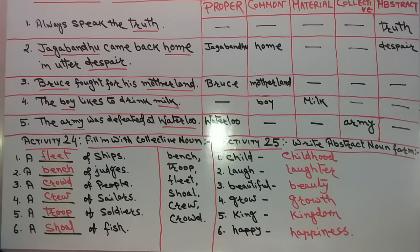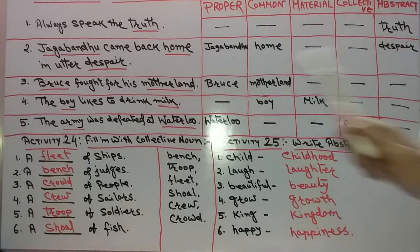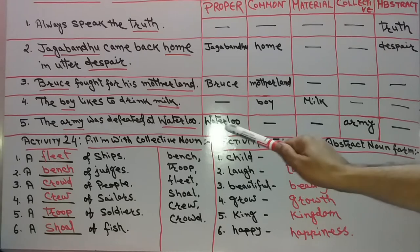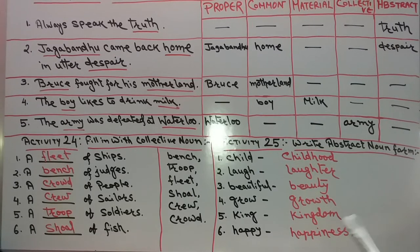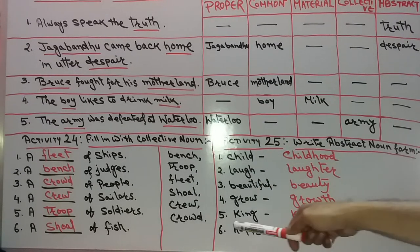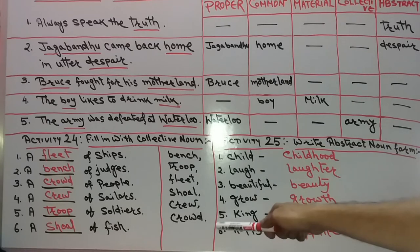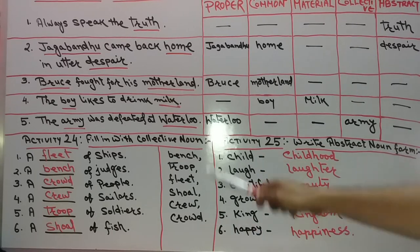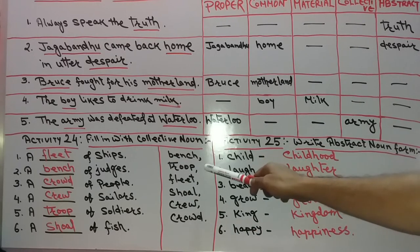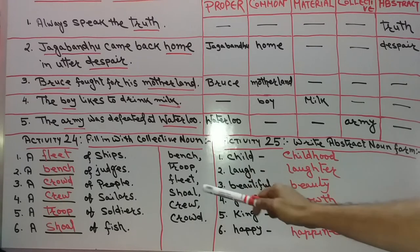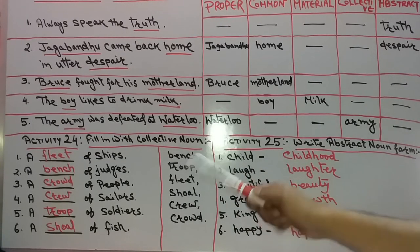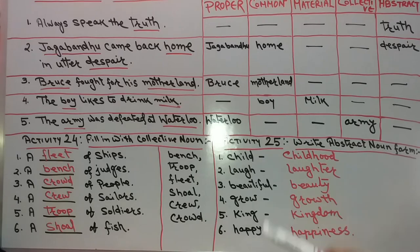Activity 23 is done. Next we go for Activity 24. Activity 24 is fill in the blanks with collective nouns. Some words are there in the help box: bench, troop, fleet, shoal, crew, crowd. We have to fill in with these collective nouns.